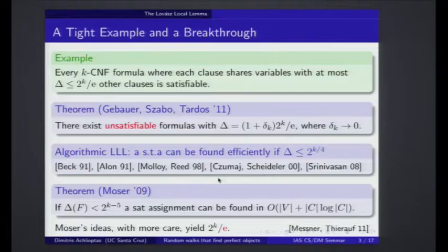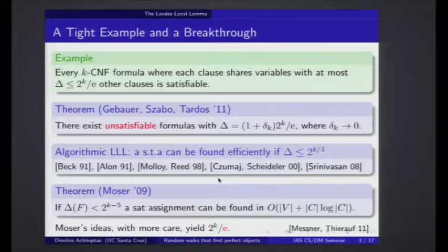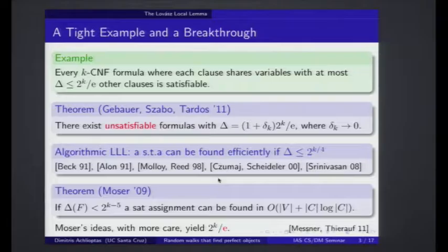The algorithm says: pick a random truth assignment in the beginning — pick a random elementary event in the probability space. Then pick any bad event, any clause that is unsatisfied. One thing that you know for sure is that this particular combination shouldn't be happening. Assume that you know nothing else — just re-randomize the variables of this clause. That's it. That's the algorithm. Just keep doing that. Precisely by the fact that you are pushing the probability measure in the direction suggested away from the violated clauses, you will eventually reach a configuration in which nothing will be violated.